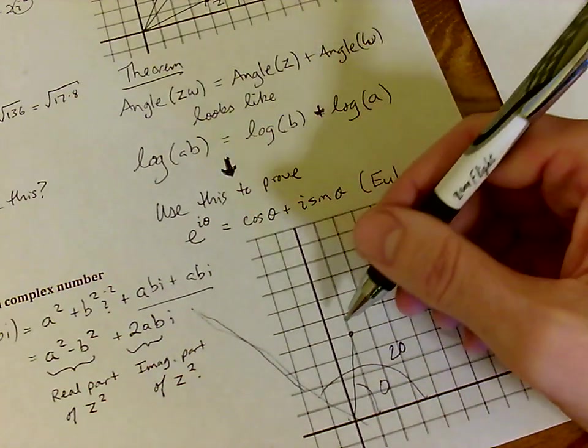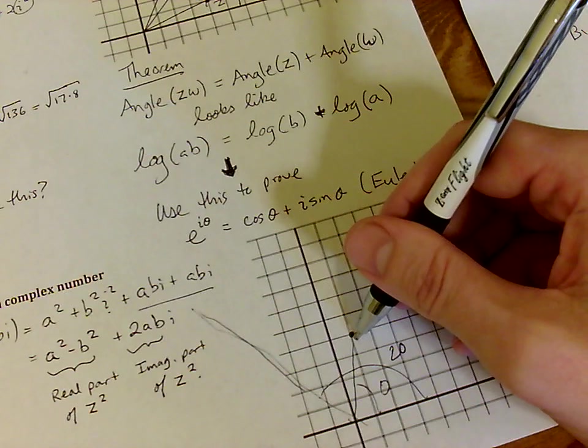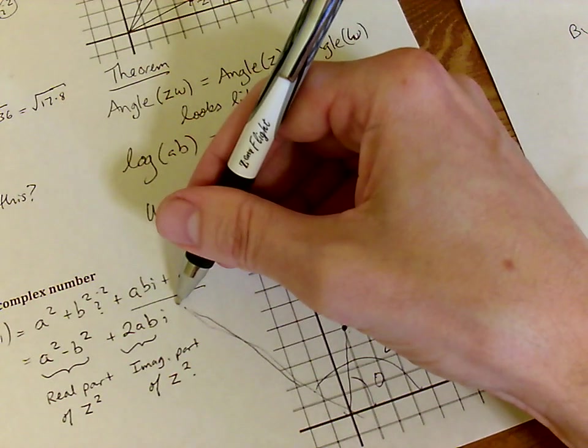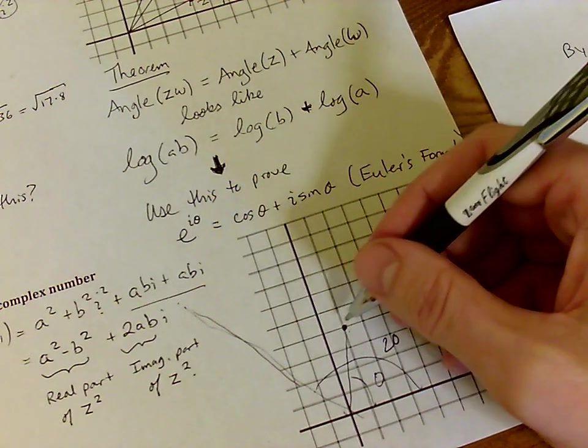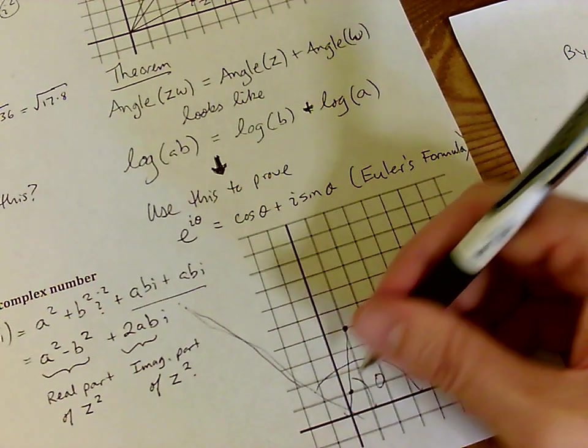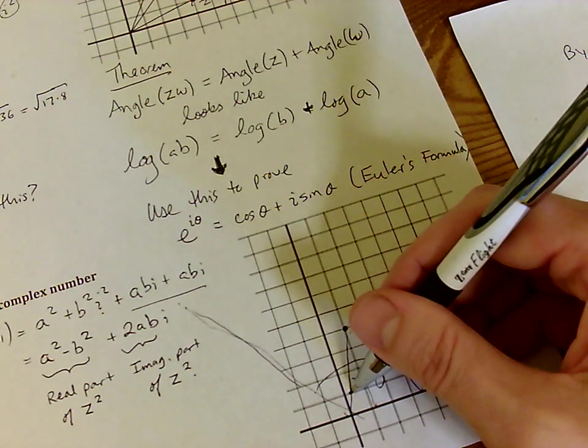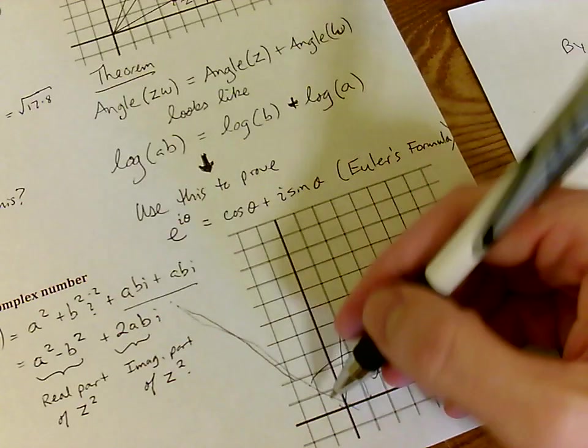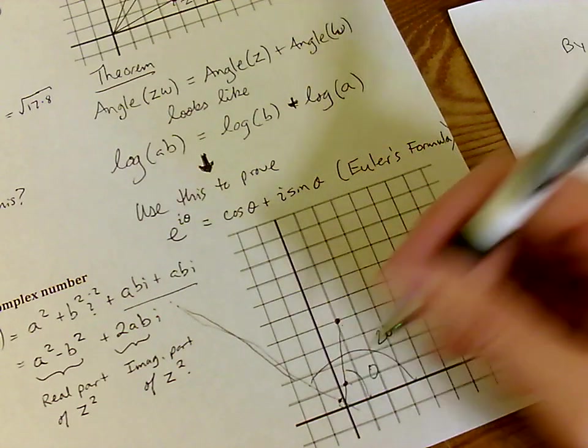Now, if this number is far from the origin, then z squared is going to be even farther from the origin. However, if this original dot is very close to the origin, then squaring it will result in a complex number that once again is on this line, but which will be much closer to the origin than where we started.